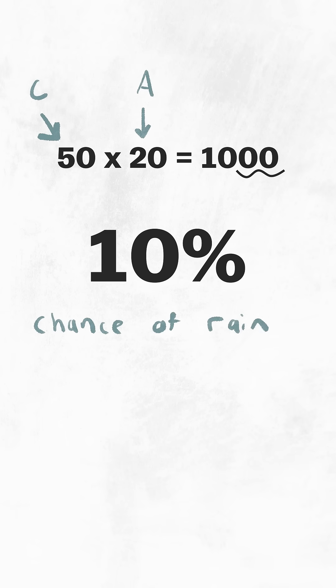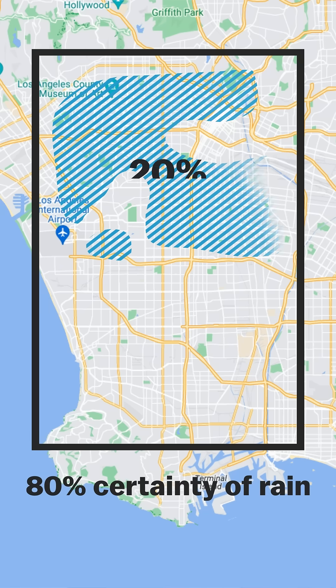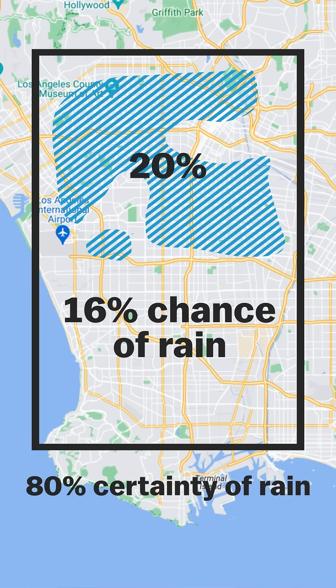So if a forecaster is 80% certain that rain will fall, but they only expect it to cover 20% of the forecast area, then they would say that there's a 16% chance of rain for that area.